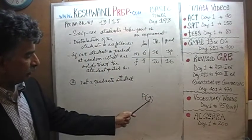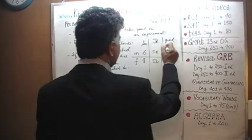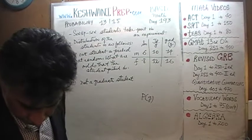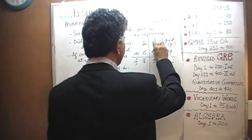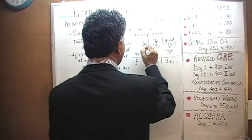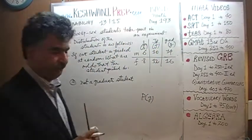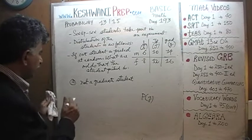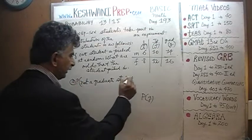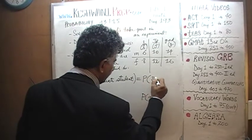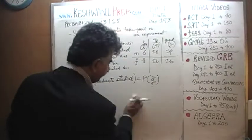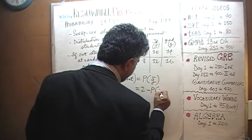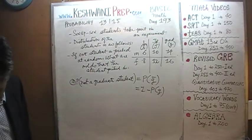We are going to represent the probability of picking graduate students as G. G for graduate students, J for juniors, and S for sophomores, just so we have consistent notation. The odds of not picking graduate students is simply P with a bar on top, and that equals 1 minus the odds of picking graduate students.